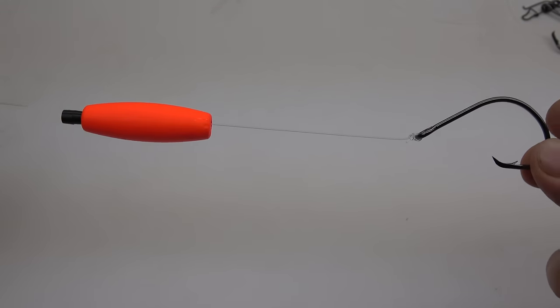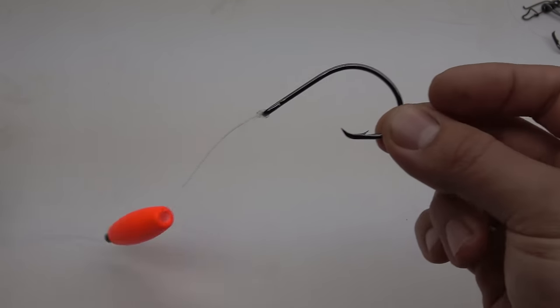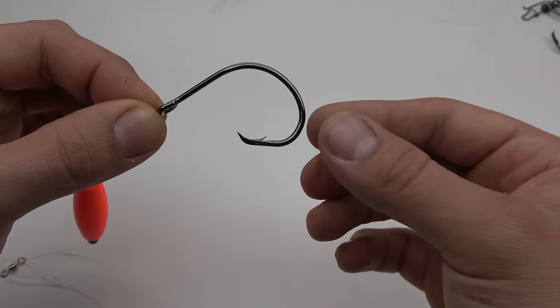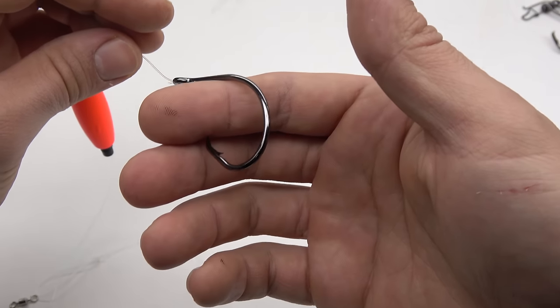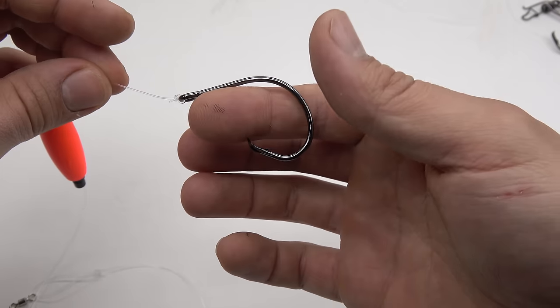This is what we call the Santee Cooper Rig. It works great for catfishing for many reasons. First of all, you're using a circle hook which, when used right, will set the hook on itself. The fish picks up the bait and the hook turns in its mouth, and you usually have a nice hook set right in the lips of the fish.